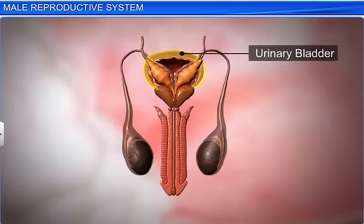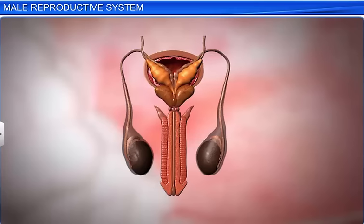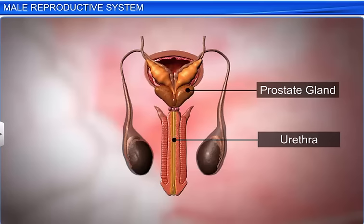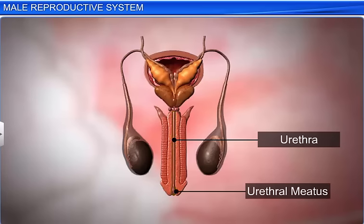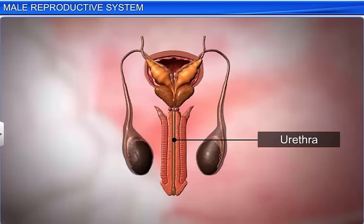The neck of the urinary bladder, ejaculatory duct, and prostate gland open into the urethra, or urinogenital canal. The urethra extends through the penis to its external opening called the urethral meatus, or urinogenital aperture. The urethra is the common passage for urine and semen.